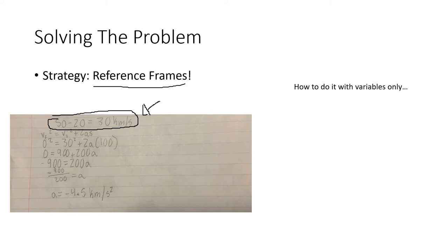In reference to the Klingon ship, the Klingon ship is going 0 kilometers a second, because we're referencing that. We use the equation VF squared equals VI squared plus 2AS here.